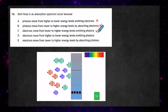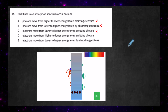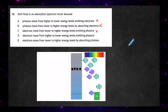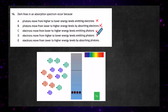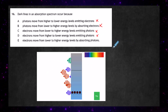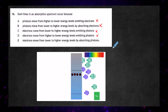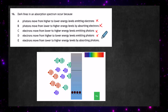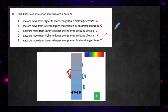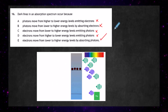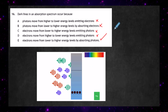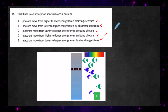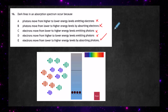Statement D — electrons move from higher to lower energy levels emitting photons — no, they move from lower to higher, so that one's wrong. The final one: electrons move from lower to higher energy levels — that's correct — and they absorb the photons in order to do that. The movie shows you that dark absorption line appearing because the red photons absorbed by the electrons have disappeared, leaving less light at that part of the spectrum.